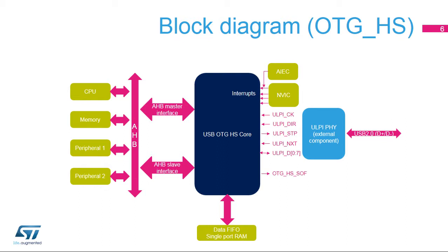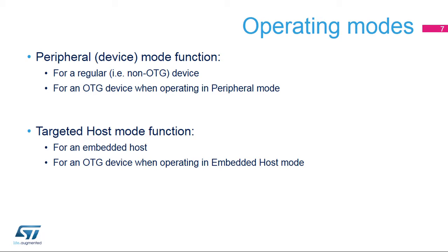Transfers to and from memory are handled by a DMA engine inside the controller via the AHB master interface. At any given time, one of the two operating modes will be functional: peripheral mode, which will be used for a regular device or an OTG device when operating in peripheral mode, or targeted host mode, which will be used for an embedded host or an OTG device when operating in host mode.